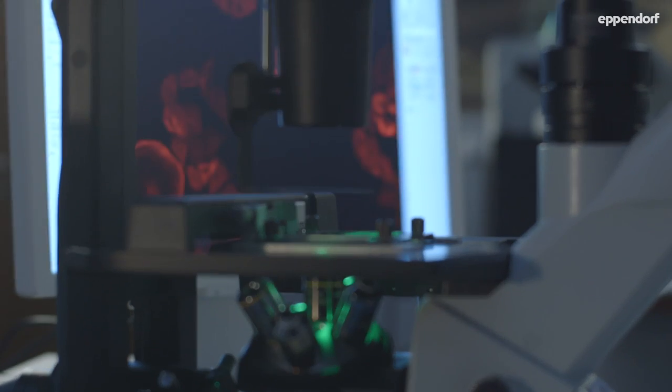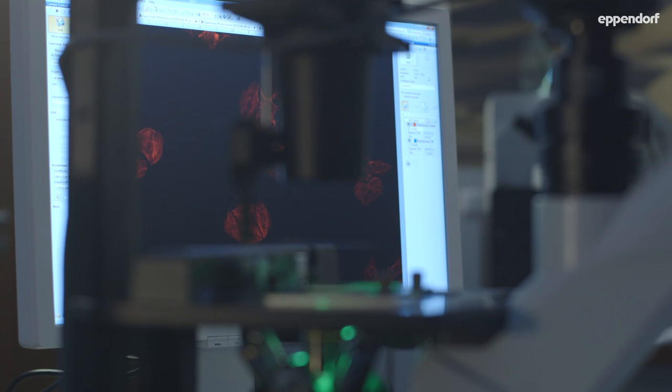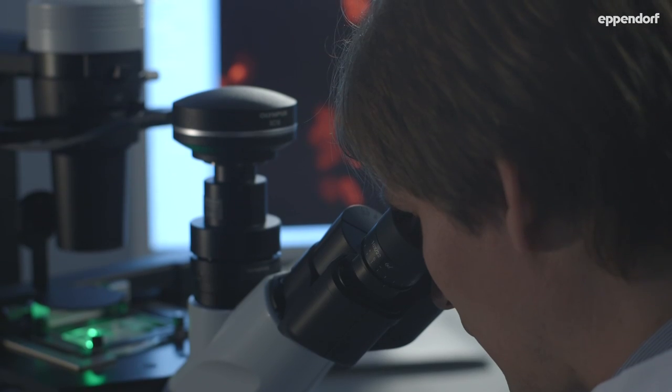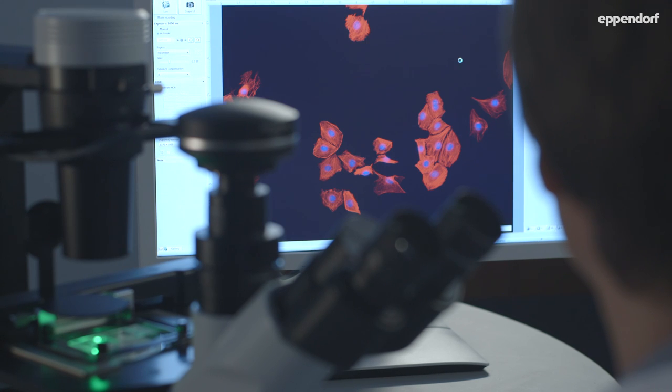Fluorescence microscopy of fixed cells is used for visualizing intracellular details. By labeling specific structures or molecules, it is possible to investigate details that an unlabeled cell does not reveal.